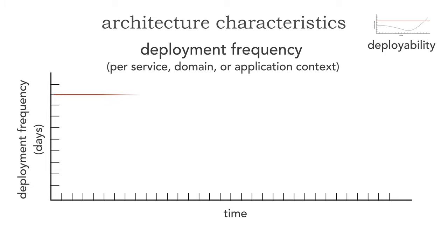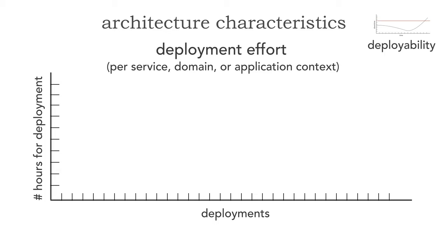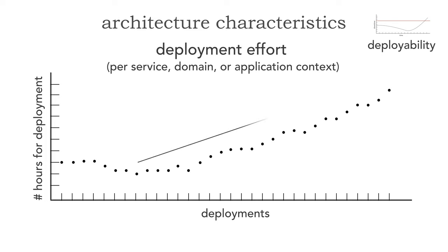The frequency I can measure by tracking how many days before we actually deploy. This can be variable based on features and change, but I should start seeing a downward trend — if I'm not, I'm not getting the advantage of any architectural refactorings on deployment frequency. For deployment effort, I measure how many hours it actually took. Notice if things were going well and all of a sudden each deployment is starting to take longer — that's a telltale sign something is going awry. Either I've got too many dependencies between services, my services are getting more coarse-grained, or they're doing too much.